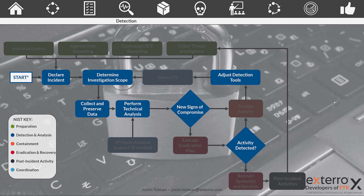I'm going to darken out what's not going to apply here. You can see: declare an incident, determine investigation scope. Once we've determined our scope, we need to collect and preserve our data, then perform analysis on that data. Once we've performed our analysis, we want to continue to look for new signs of compromise. If we detect that activity, we continue to perform actions, and once we no longer detect activity, we can adjust our tools with what we've learned and the sequence continues.